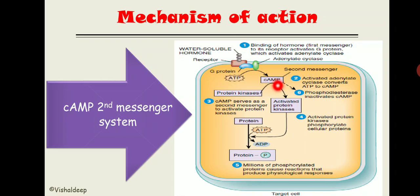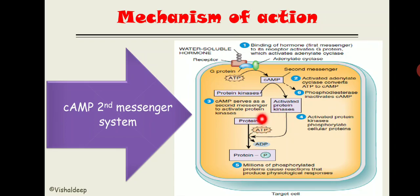Once adenyl cyclase gets activated, it converts ATP into cyclic AMP. When sufficient cyclic AMP is formed, it converts protein kinase into activated protein kinase A — 'A' standing for AMP. This activated protein kinase A phosphorylates different cellular proteins and performs parathyroid hormone function.